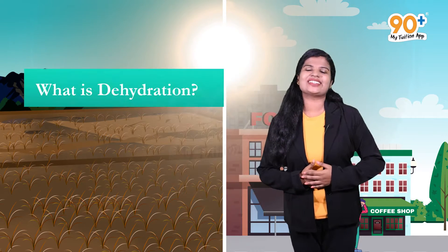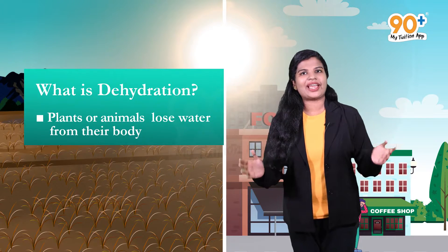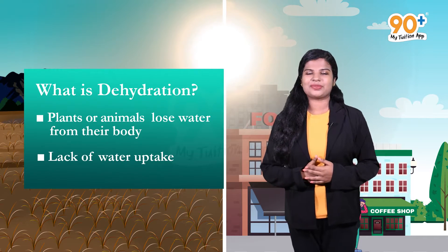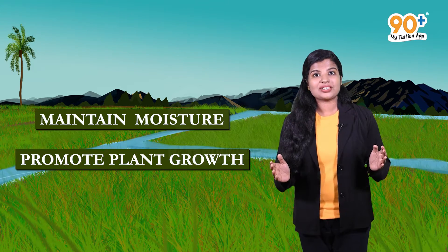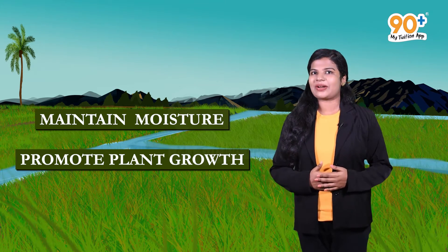Have you ever felt thirsty while roaming a long day in the sun? So what about plants? Plants also dry up because of dehydration. Dehydration is the process by which a plant or animal loses water due to lack of water uptake. We have to provide plants with enough water. Seeds need water for germination and cannot germinate under dry conditions. Fields are watered regularly not only to maintain moisture content of the soil but also to promote plant growth. The process of watering fields at regular intervals is called irrigation.